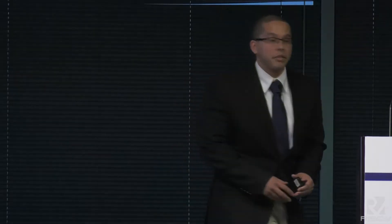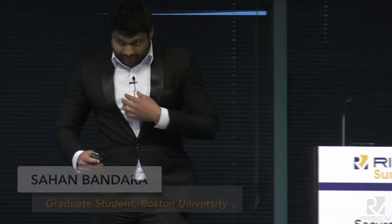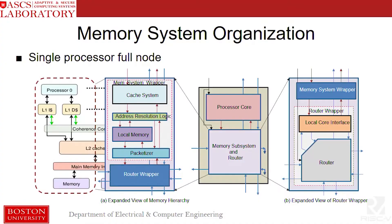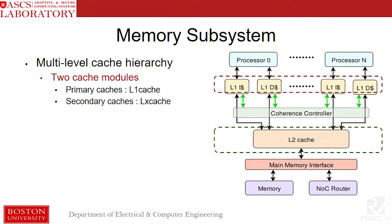The BRISC-5 toolbox supports a configurable memory subsystem. This is an expanded view of how the memory subsystem interacts with the processor cores and the network on chip. BRISC-5 supports configurable multilevel cache hierarchies.